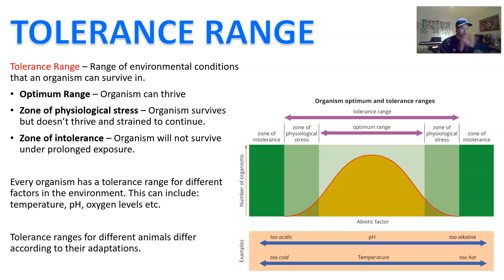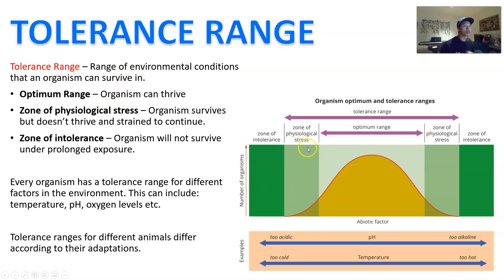The tolerance range has three key zones. There's an optimum range where the organism is going to thrive — it's going to be able to reproduce and live indefinitely in that particular range of conditions. Then you have what we call the range of physiological stress, outside of the optimum range, where the organism will survive but not very well, and the number of individuals that can survive there is actually very low.